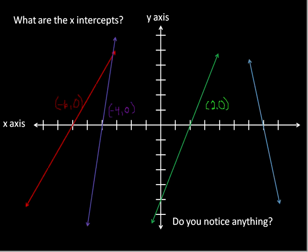And the final line, the blue line, crosses right there at the point — counting 1, 2, 3, 4, 5, 6, 7 — and again, 0, because it's not moving up or down. So the x-intercept of the blue line is (7, 0). Do we notice anything about these points? In every single case, our x-intercept — the place where it crosses the x-axis — our y value is 0. That's the case every single time.